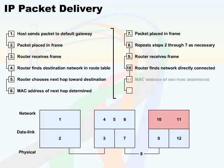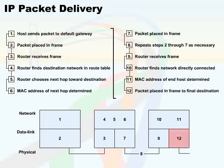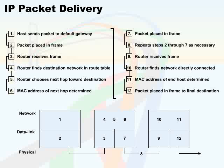The MAC address of the end host is determined by using ARP, and finally the packet is placed in a frame to the final destination. All the while, from the original transmission of the data, through every router and every ARP process, we never have to cover anything above layer 3.